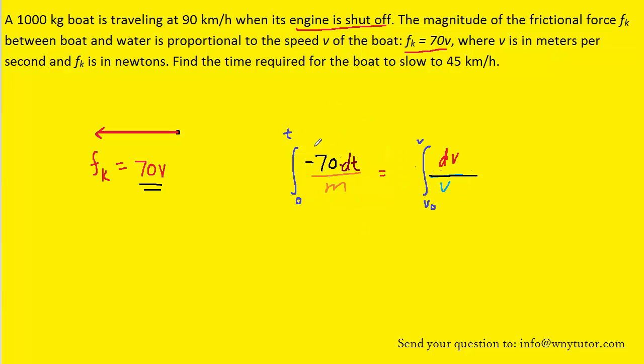To evaluate the integral on the left side we can remove the constants to the outside of the integral. Now these are both relatively simple integrals. The one on the left of course will just become t, and the one on the right is the natural log of the velocity.